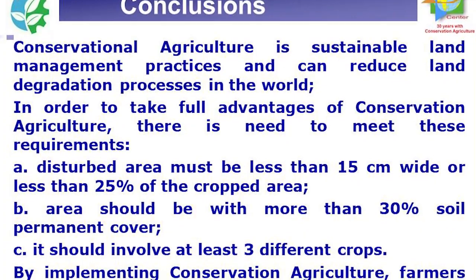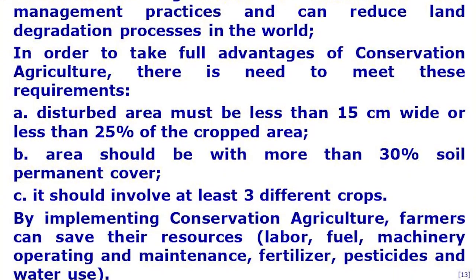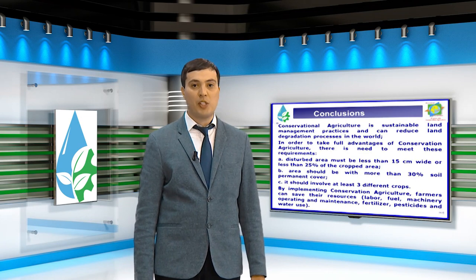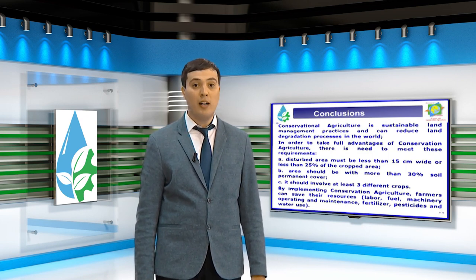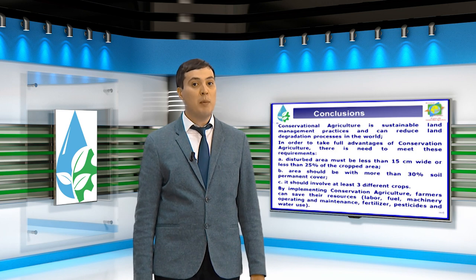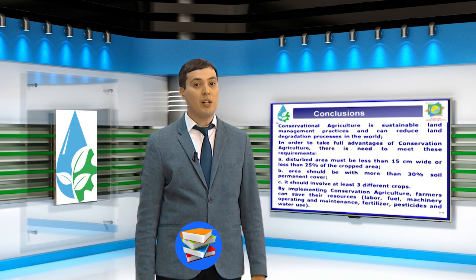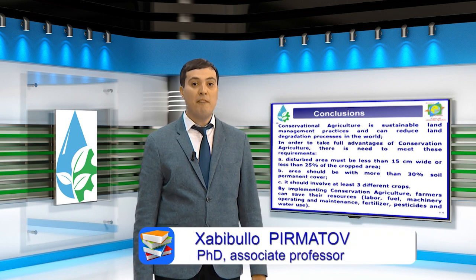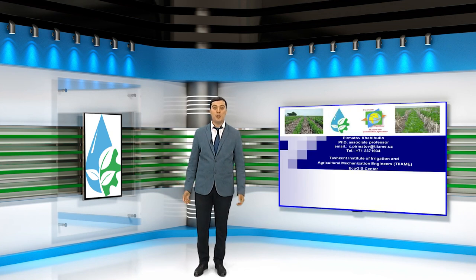In conclusion, conservation agriculture is a sustainable land management practice and it can reduce land degradation processes in the world. In order to take full advantage of conservation agriculture, the disturbed area must be less than 15 cm wide or less than 25% of cropped area, the area should have more than 30% permanent soil cover, and it should involve at least three different crops. By implementing conservation agriculture, farmers can save their resources. Thank you very much for your attention. I hope to see you next time.